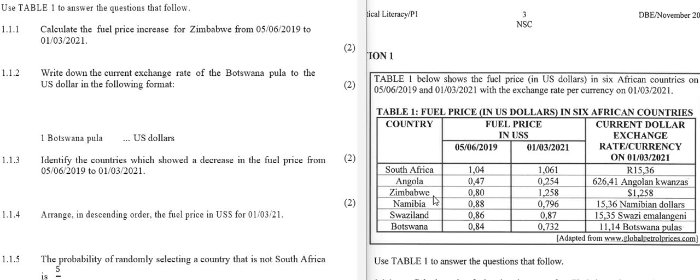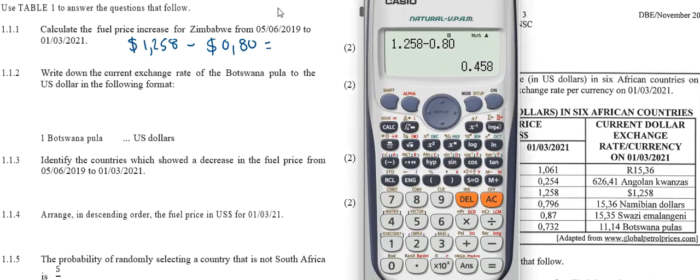Question 1.1.1: Calculate the fuel price increase for Zimbabwe from 2019 to 2021. We'll use the Zimbabwe row. This is easy. If we take the 2021 price and minus the 2019 price, the old price, that will give us the increase. Go to your calculator to check. You'll find that the difference is 0.458 Zimbabwean dollars, and that is the increase.